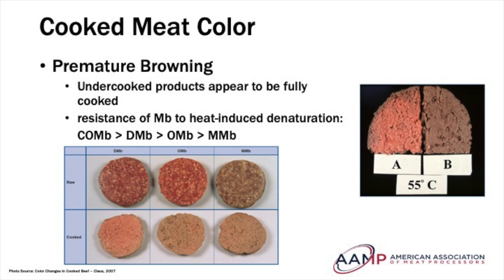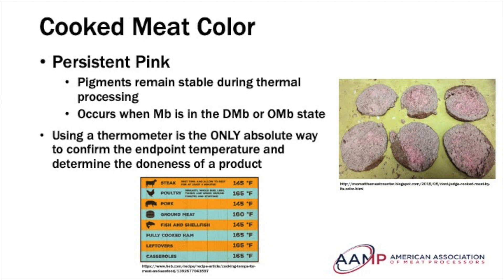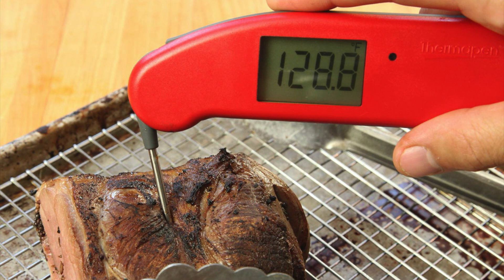Another quality issue that can occur because of myoglobin denaturation is called persistent pink. This is a condition where the pigment becomes difficult to denature and remains stable during thermal processing, resulting in uncooked or undercooked colors appearing in fully cooked products — the opposite of premature browning. This can occur when myoglobin is in a reduced deoxymyoglobin or oxymyoglobin redox state and is more common in meat with higher myoglobin content, like from older cows or bulls. It also occurs when the pH of the meat is higher than normal, as the higher pH protects the myoglobin from heat denaturation and keeps the colors looking pink and undercooked. Using a meat thermometer is the only safe way to confirm the endpoint temperature and determine the doneness of a product.